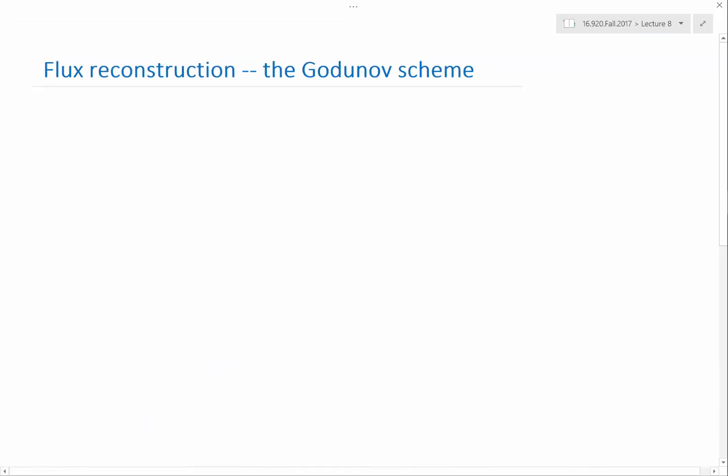So this leads us to the Godunov scheme. The Godunov scheme is basically exactly what we just discussed. The flux at i plus half is going to be the Godunov function of u of i and u of i plus 1.